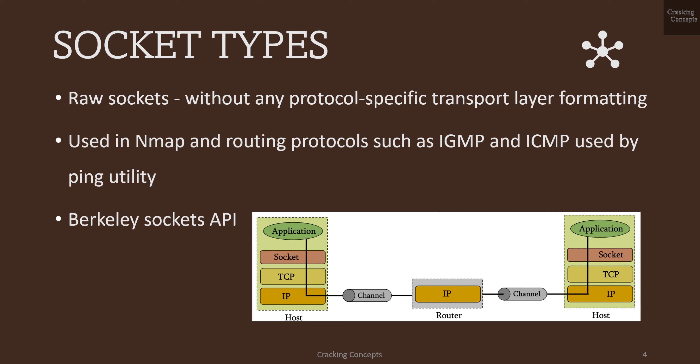The third type is raw sockets. They allow direct sending and receiving of IP packets without any protocol-specific transport layer formatting. They are used in security-related applications like nmap, a network scanner used to discover hosts and services on a computer network by sending packets and analyzing their responses. They are also used in routing protocols like IGMP (Internet Group Management Protocol) and ICMP (Internet Control Message Protocol), used in the ping utility.